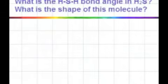What is the H-S-H bond angle in H2S hydrogen sulfide and what is the shape of this molecule? How many grams of carbon dioxide are there in a 0.32 mole sample of this gas?